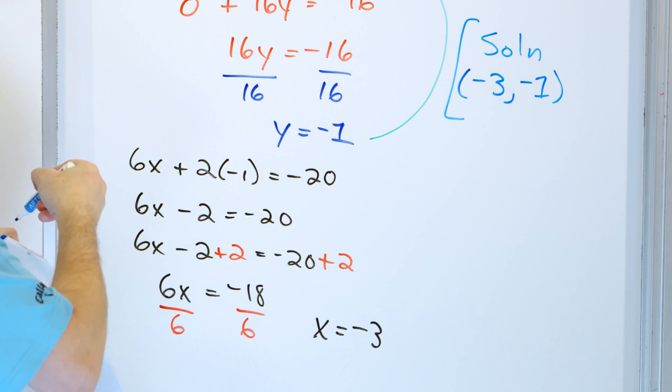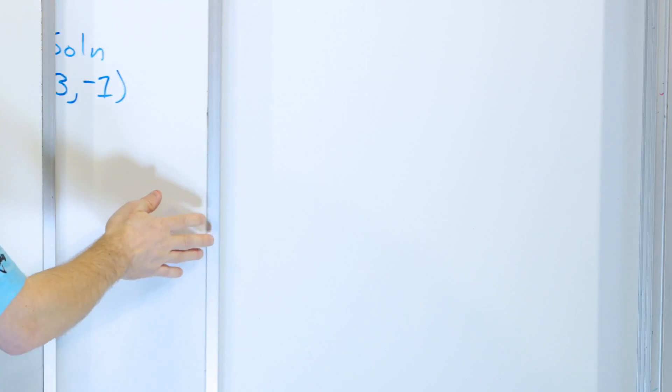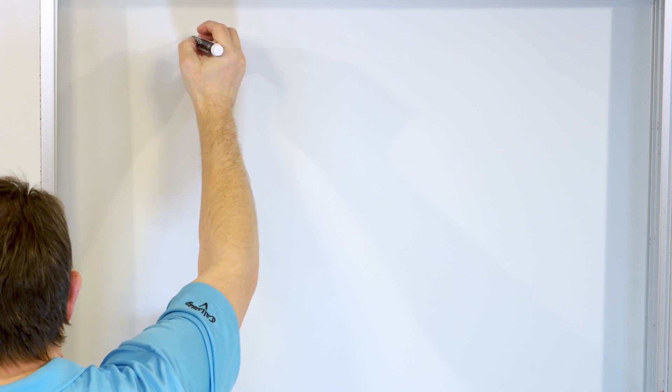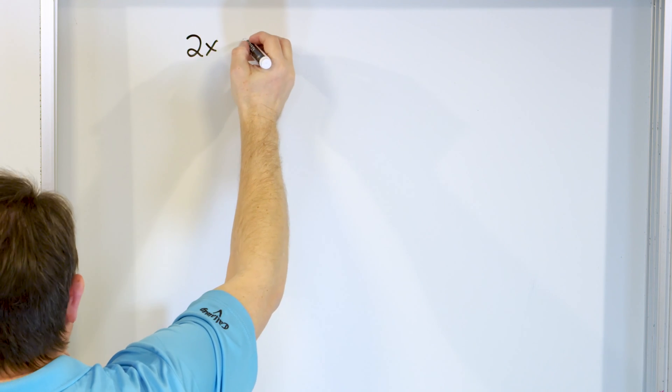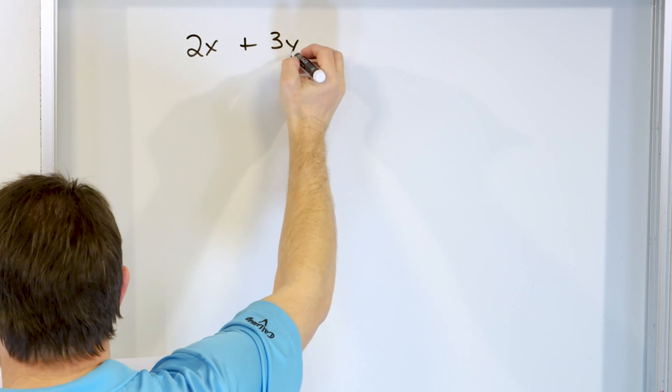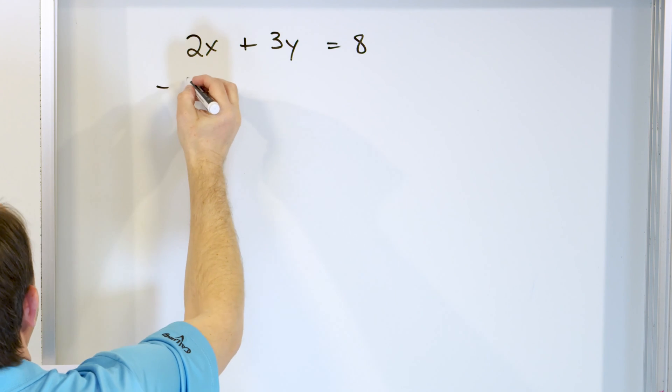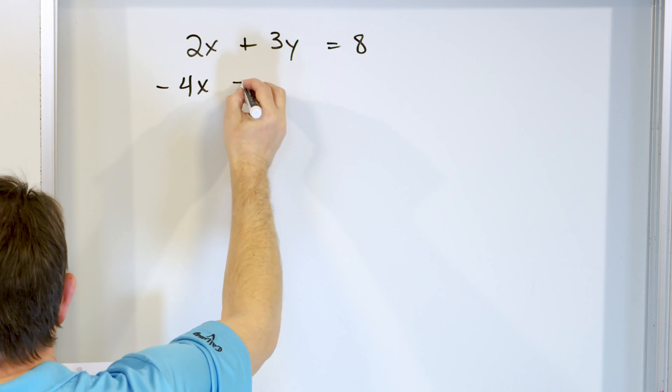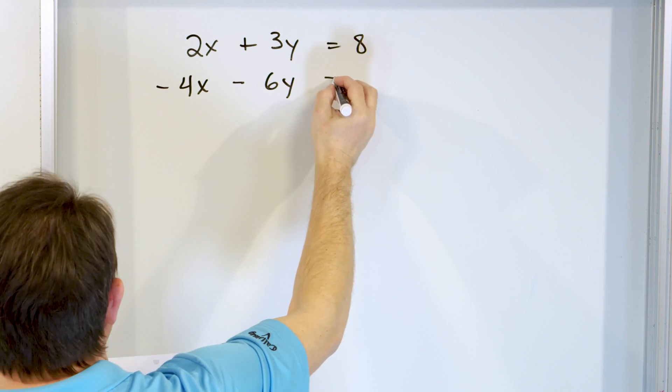Up till now, all of these problems have had a single intersection point. We learned before that if two lines are parallel and they never cross, they don't have an intersection point and so there's no solution. It's really easy to see when you graph it. But let's see what happens when we try to solve a system like that. Here's our last problem: 2 times x plus 3 times y equals 8, and negative 4 times x minus 6 times y equals 10.